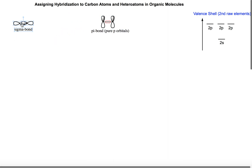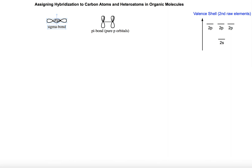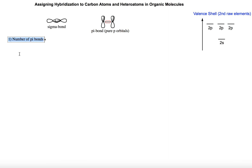With those definitions, we can start defining the steps we are going to follow to assign hybridization to organic molecules. The number one thing to look at is going to be the number of pi bonds, since the number of pi bonds will allow us to easily assign hybridization to atoms in organic molecules.